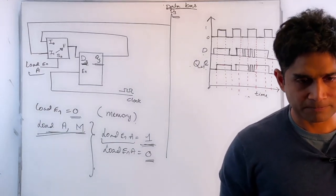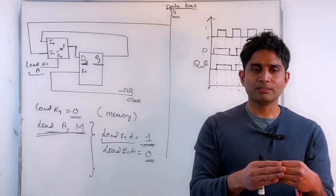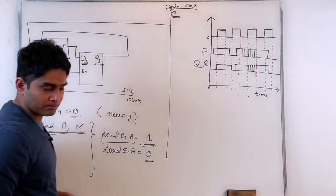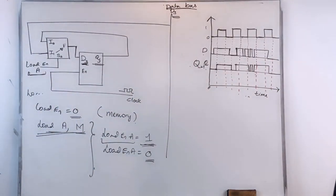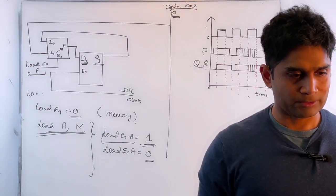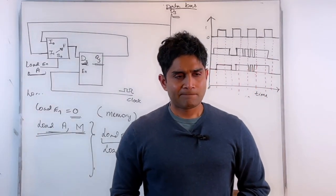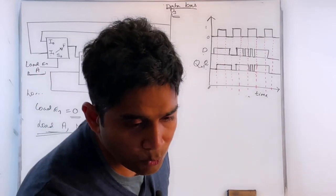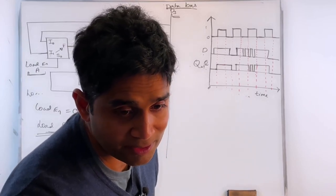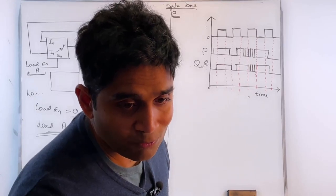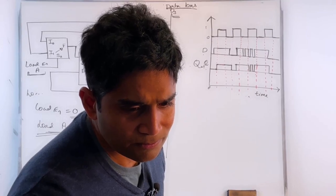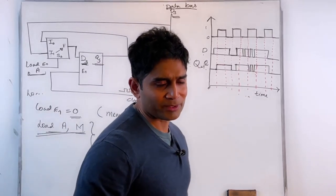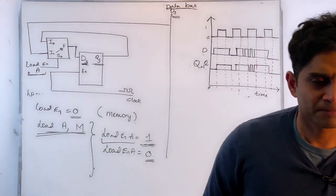Each register has a different load enable signal — load enable A for register A, load enable B for register B, and so on — allowing me to address which register stores the information. You would do the same for each register in the system.